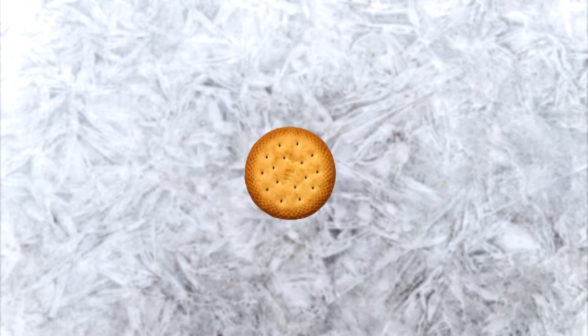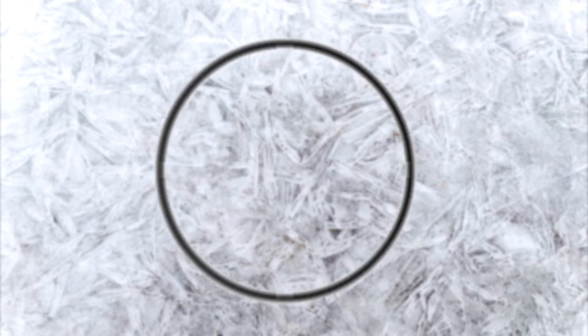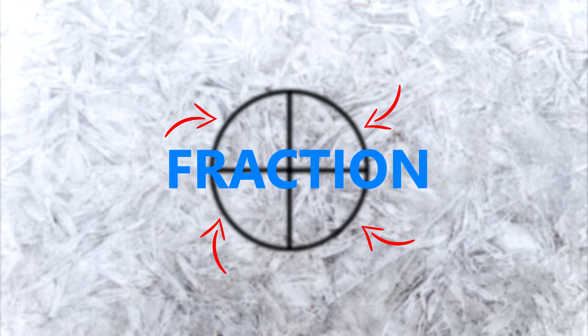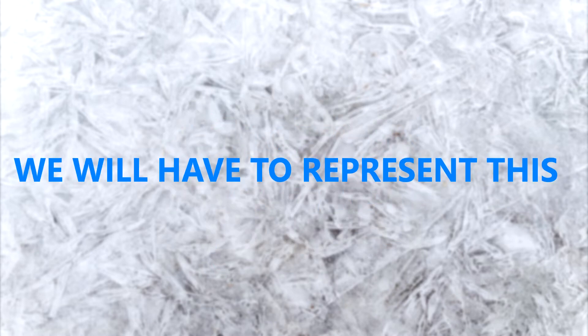So let's start by drawing a circle. This circle represents whole. This whole could be a whole biscuit, whole pizza. And if we divide this circle into 4 equal parts, then each of these parts represent a fraction of the whole circle.